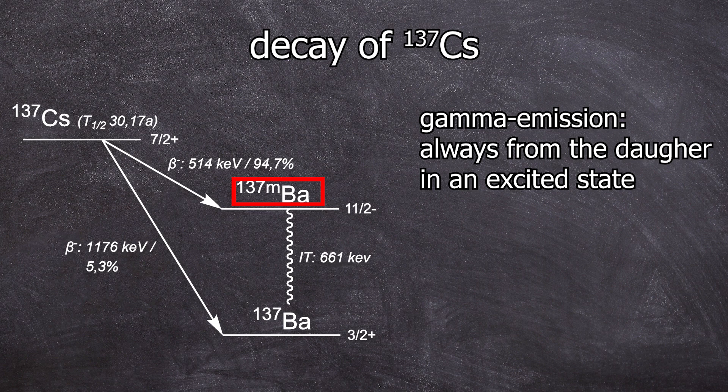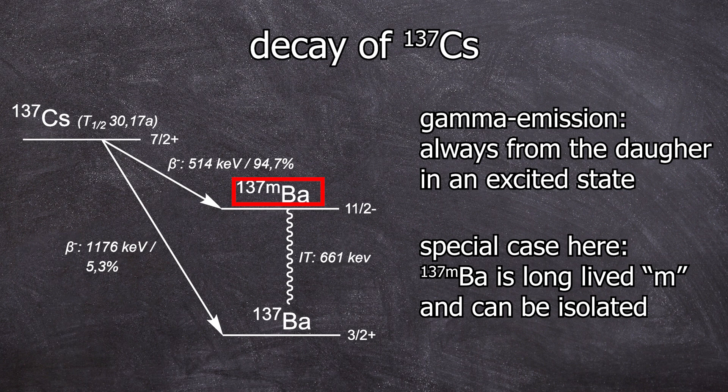Gamma rays always come from the excited state of the daughter nucleus. What's special here is that the excited state is so long-lived that it can be isolated in the lab. Something that's quite rare, to be honest. Still, the 661 kiloelectron volt line is often called the cesium line because this is how it's commonly referred to. And this barium-137M can only be produced through the cesium-137 decay.